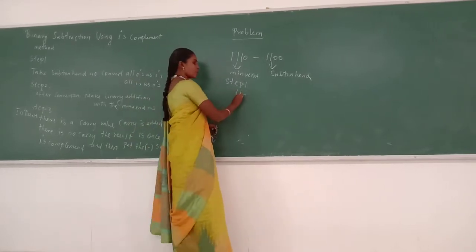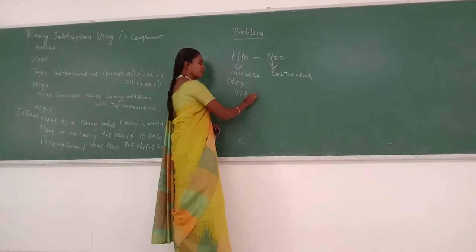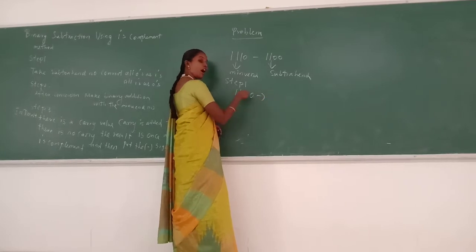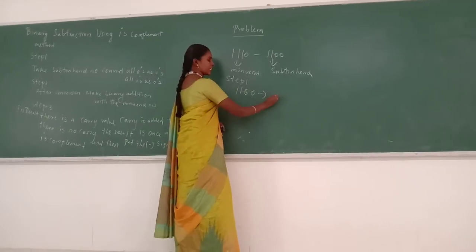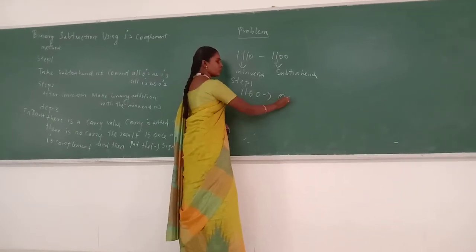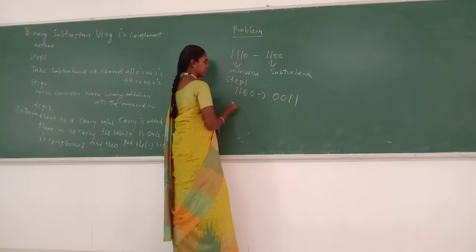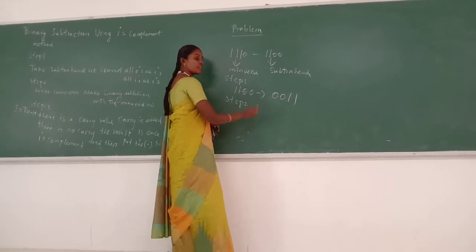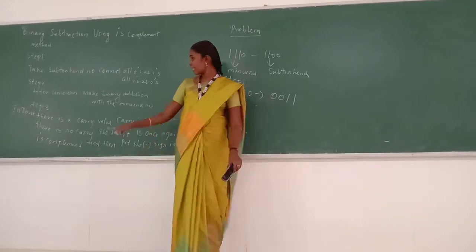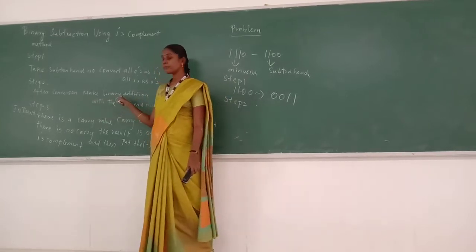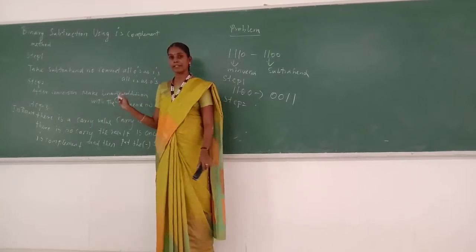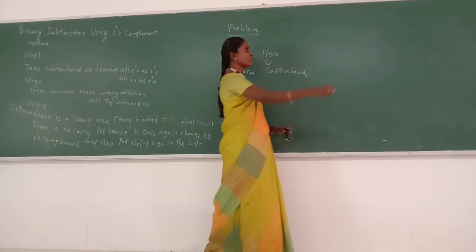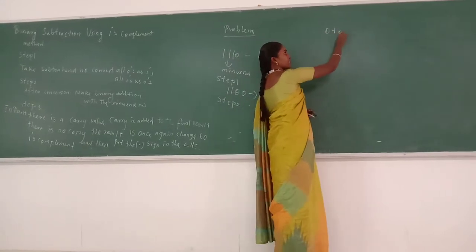Take that number 1 1 0 0, convert all zeros as ones and all ones as zeros. So we get 0 0 1 1. Step 2: Make binary addition with the minuend number. We know the basic logic of binary addition.